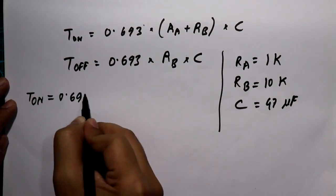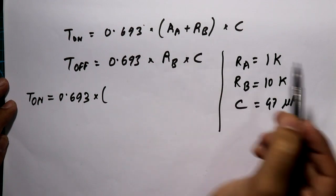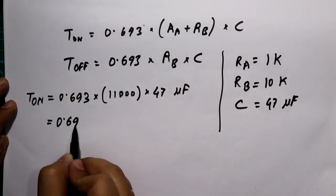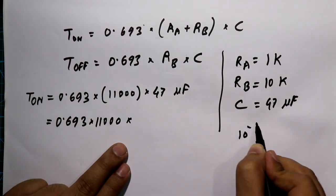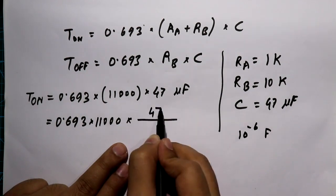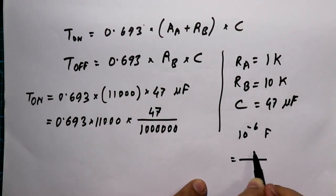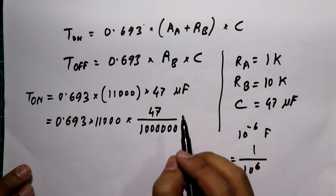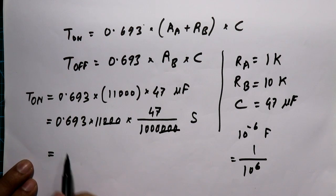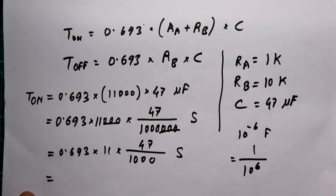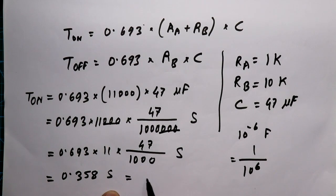T_on = 0.693 × (RA + RB) = 0.693 × 11,000 ohms × 47 microfarad, where microfarad means 10 to the power of minus 6 farads. Calculating this gives us 0.358 seconds, which we can write as 358 milliseconds. So T_on = 358 milliseconds.